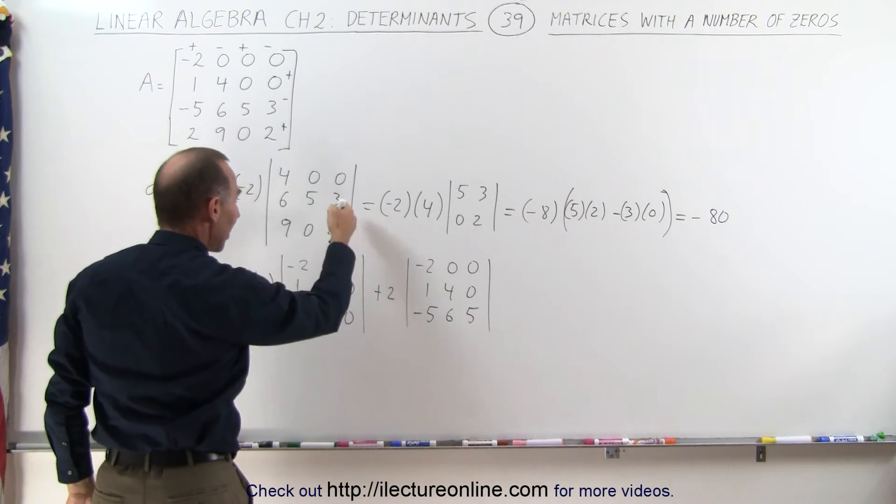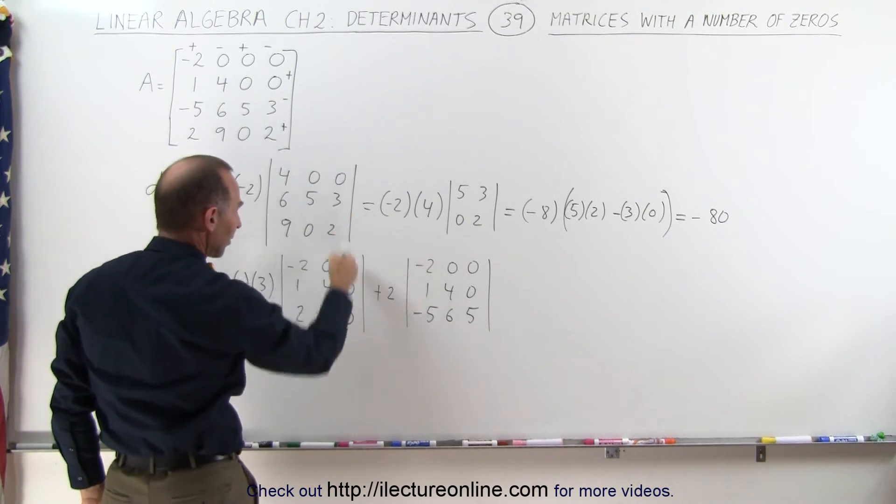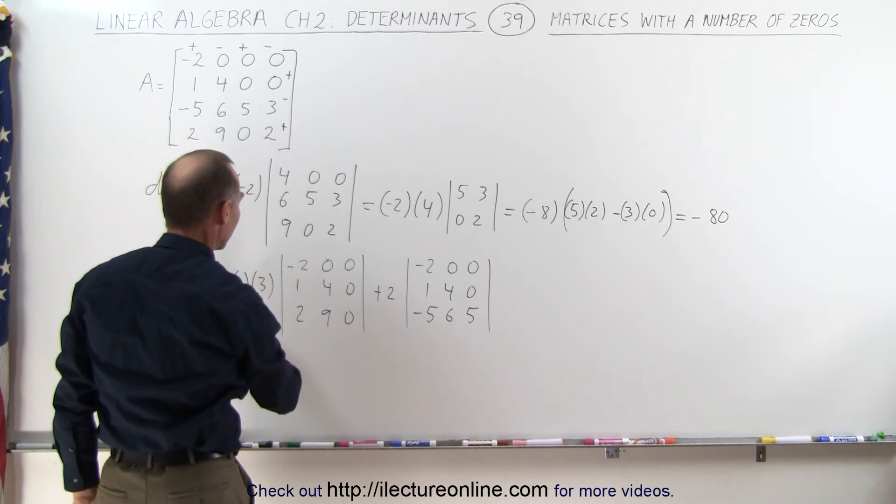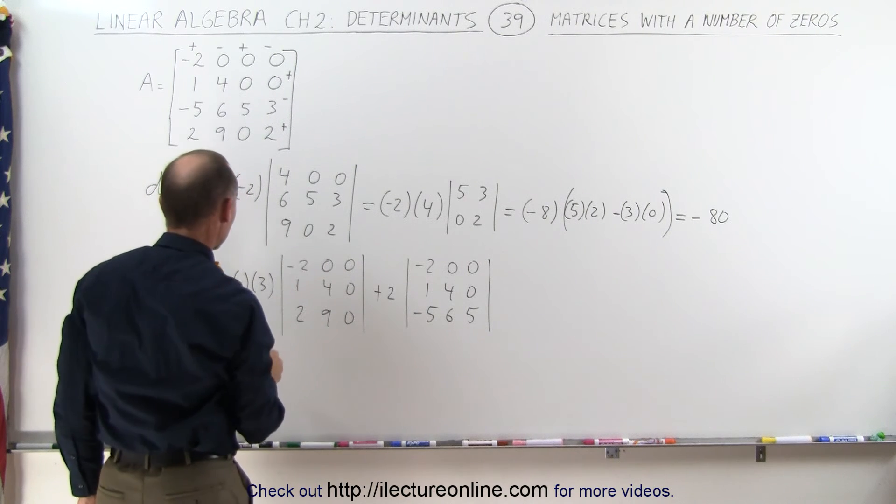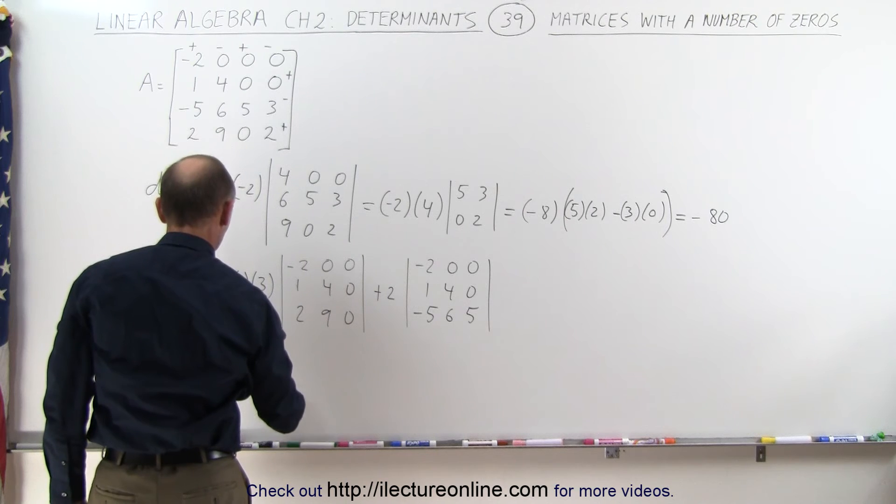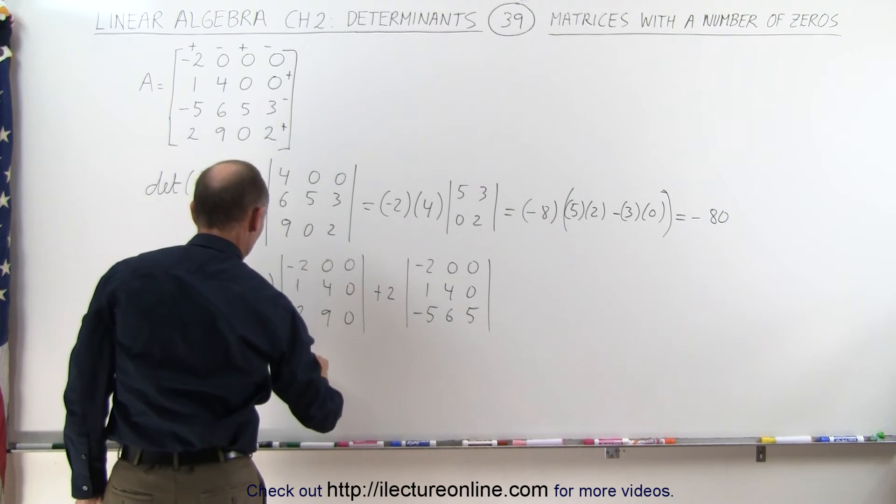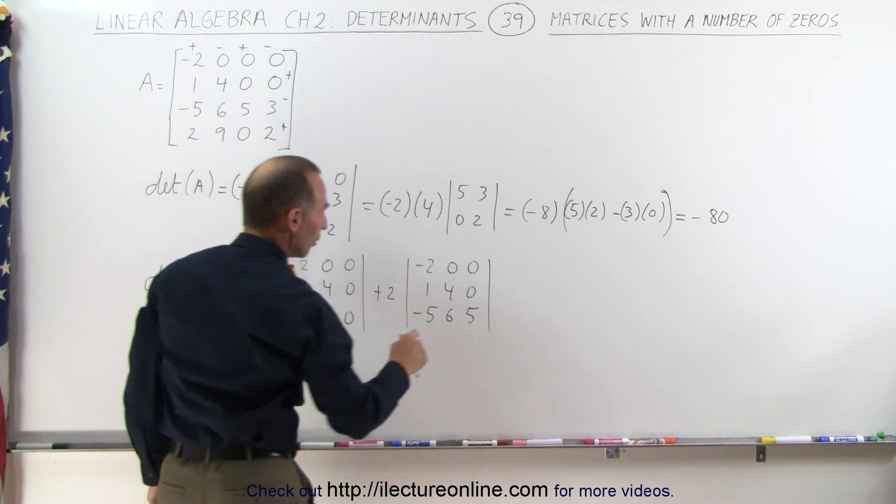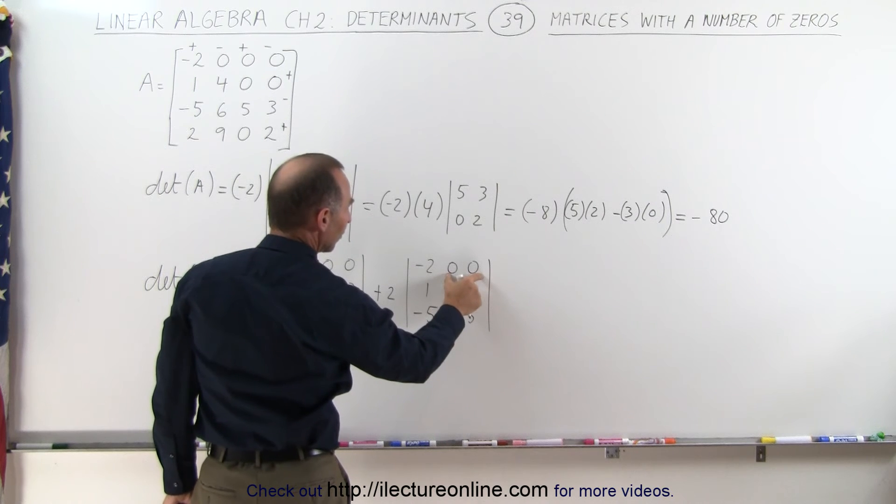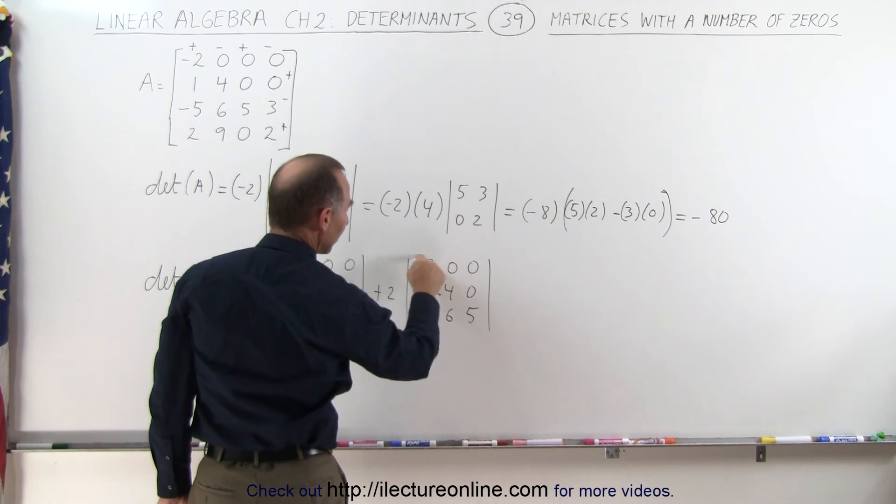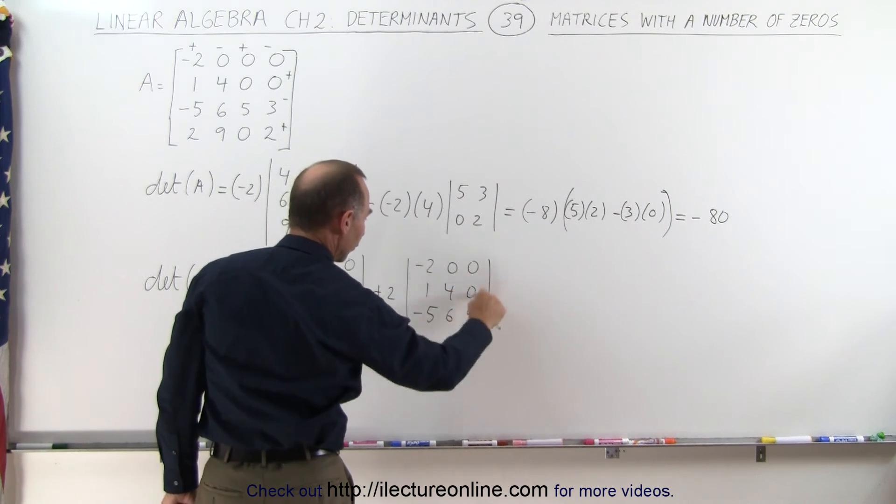Now here notice that this entire column is all zeros. If we have an entire column all zeros, this whole determinant goes to zero. So this becomes zero plus 2 times. Now notice that these are all zeros, so we only have to take this element and those four elements there.